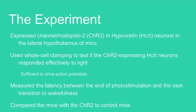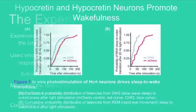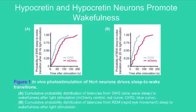The researchers then measured the latency between the end of photostimulation and the next transition to wakefulness, comparing channelrhodopsin-2 expressing mice to control mice. The blue lines are the channelrhodopsin-2 expressing neurons and the red lines are the controls. The channelrhodopsin-2 expressing mice had a decreased latency period for both slow-wave sleep and REM sleep, shown by the leftward shift of the blue lines, indicating that activation of hypocretin neurons promotes wakefulness.